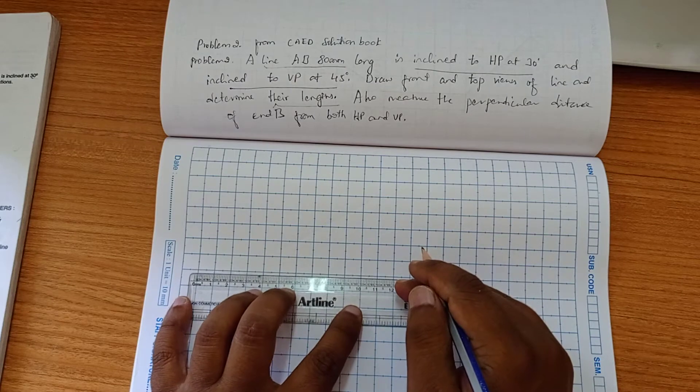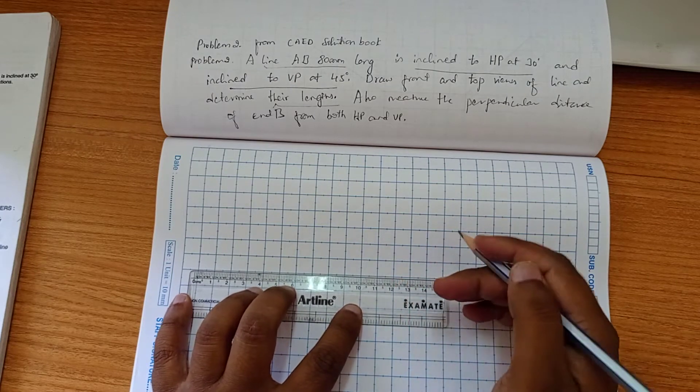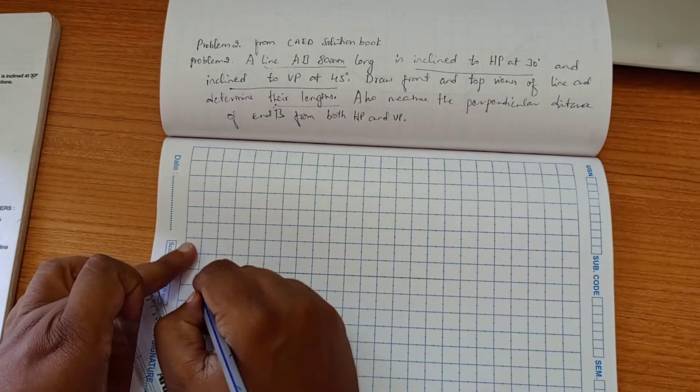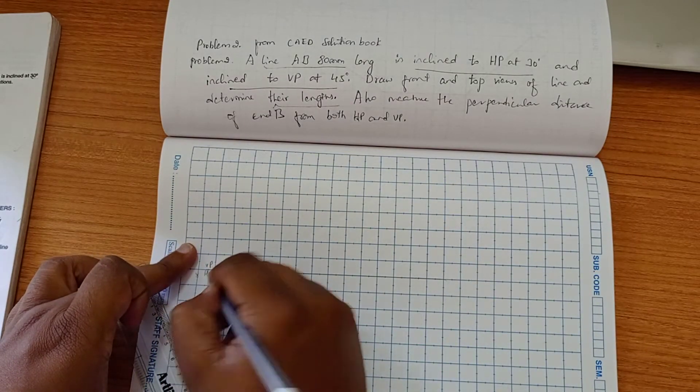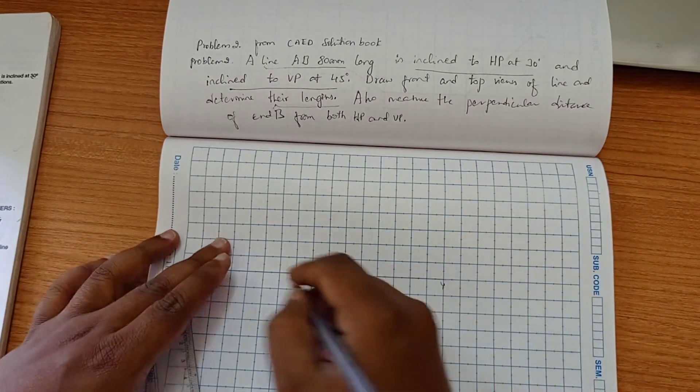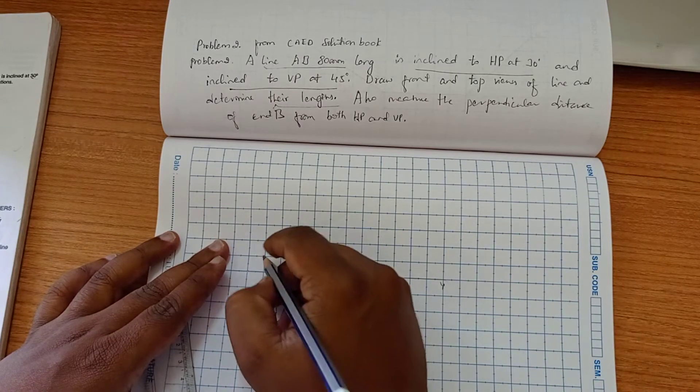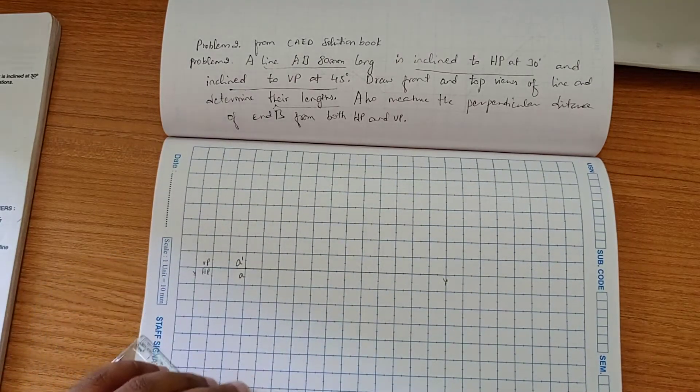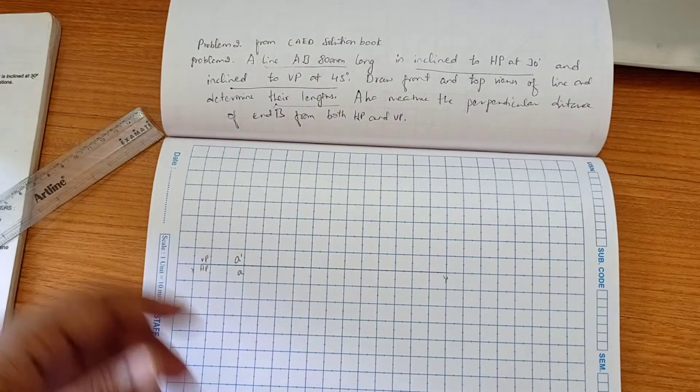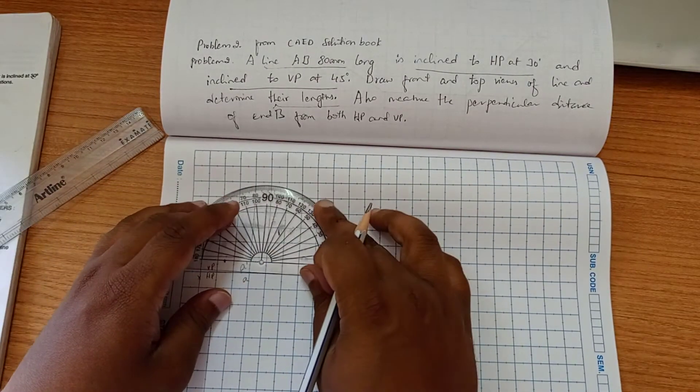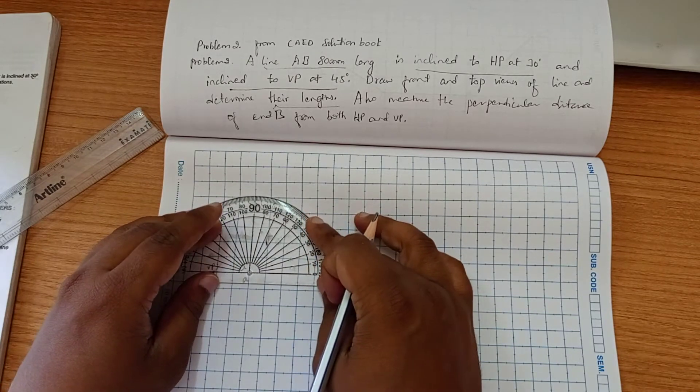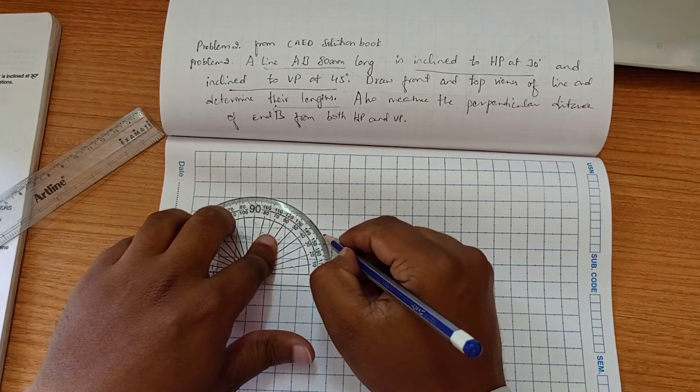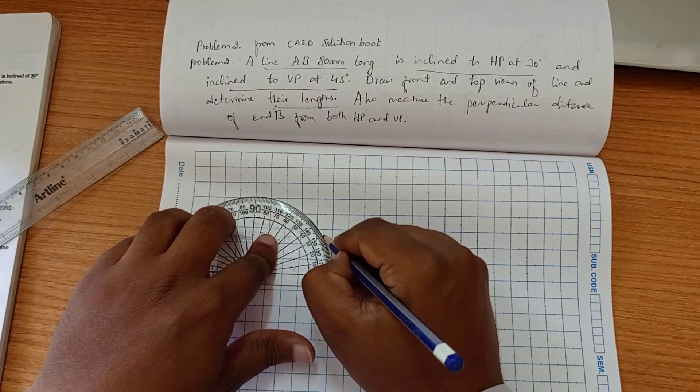First I am going to draw an XY line here. I will take a reference point here - this is A' and here is A. They have not given any end of the line distance, so no need to draw the locus. The locus line is there on the XY. First inclination is inclination to HP at 30 degrees.